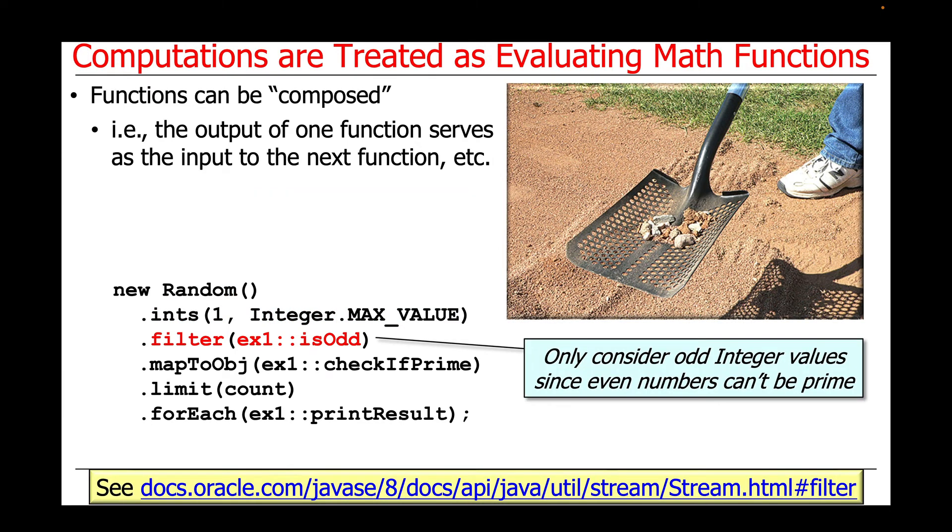We'll then connect that output of random numbers to the filter intermediate operation in streams. And filter is used to decide whether or not the element should continue to the next stage in the pipeline.